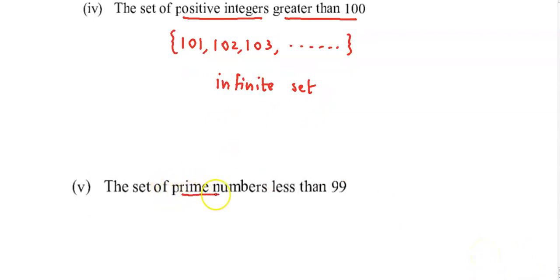Set of prime numbers less than ninety-nine: 2, 3, 5, 7 and so on. The prime number before ninety-nine is ninety-seven. So basically the list has an end, the set's elements have a defined end. Therefore, this set is a finite set.